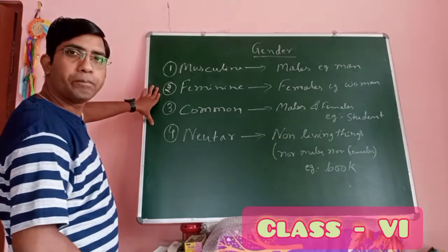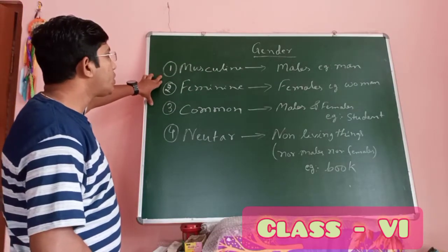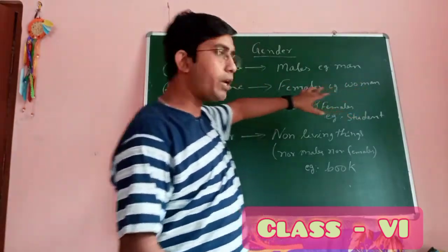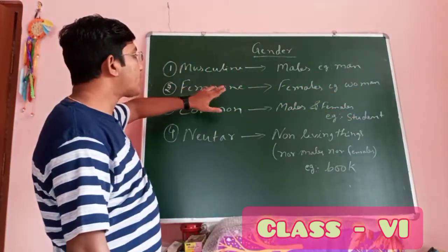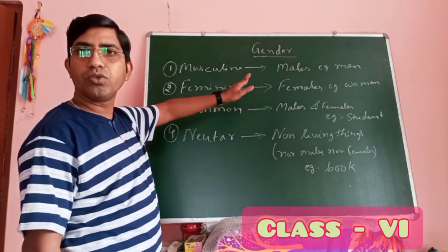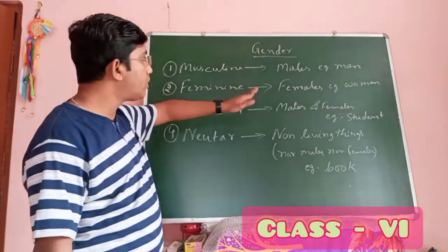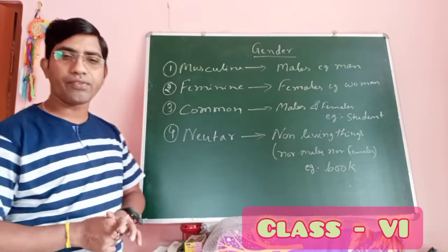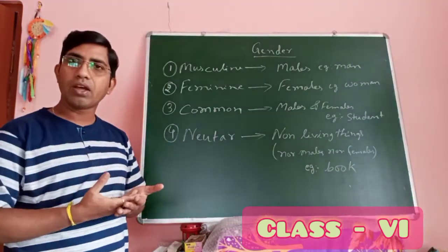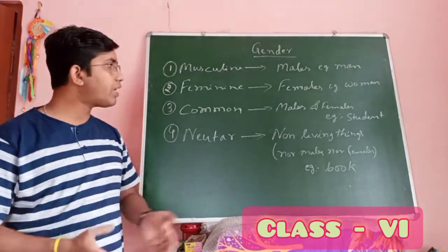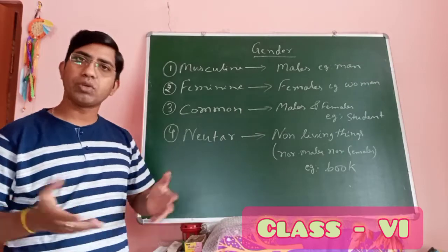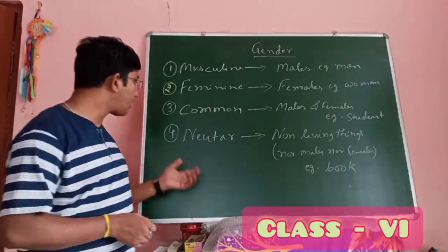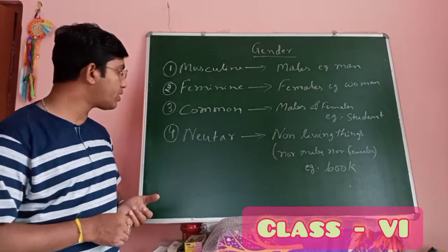One is masculine gender, which refers to males — example: man. Feminine gender refers to females — example: woman. Common gender refers to either males or females — like the word 'student', which may be male or female.